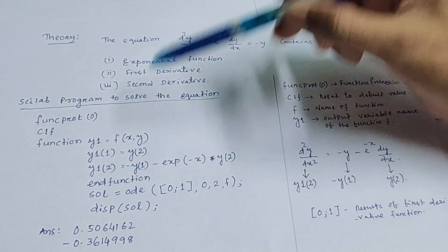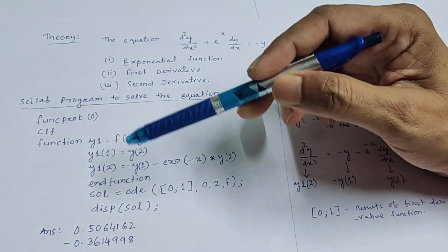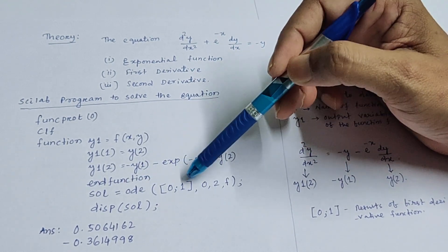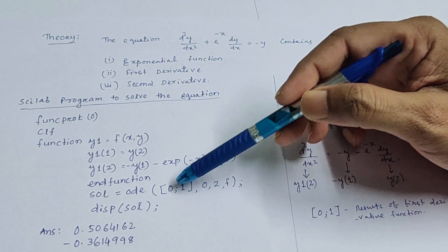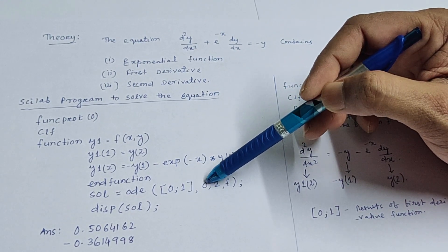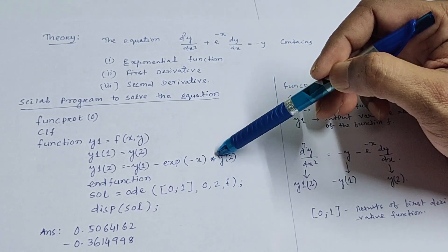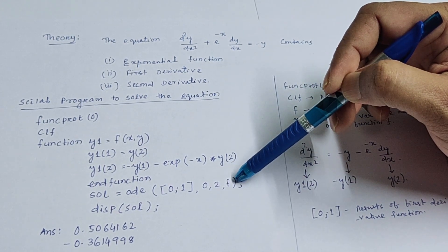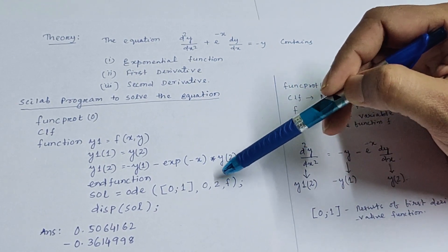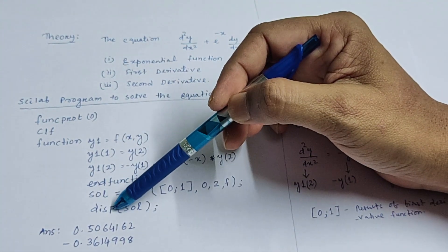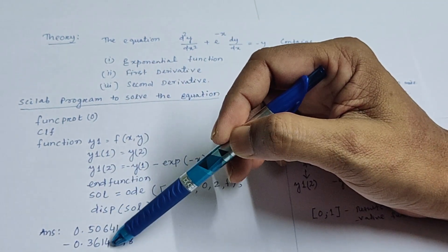For the solution of the second order differential equation, you use the built-in ODE function in Scilab. You pass [0, 1] in square brackets — meaning the initial values — from 0 to the value at which you are finding the solution, giving four variables in total. After writing the display solution command, you get two solutions: one for the first derivative and another for the second derivative.